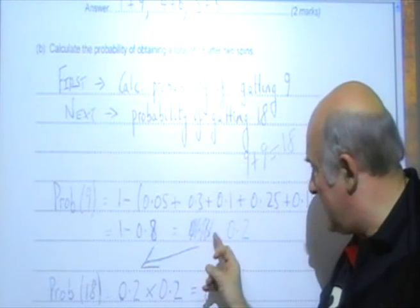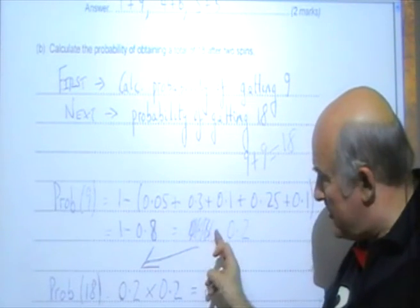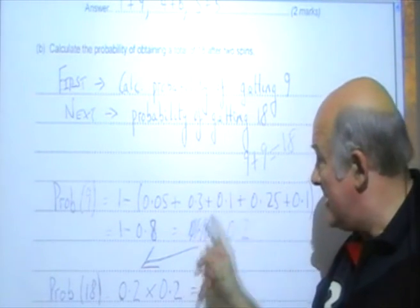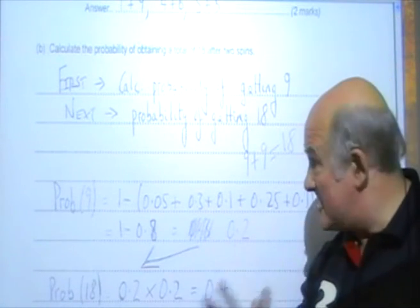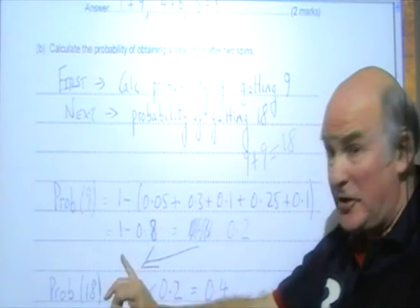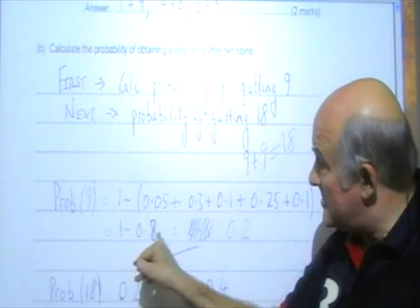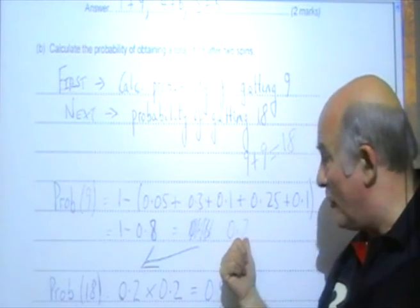Slight slip. Not too serious. 0.3, wrong answer. But realizes the answer is wrong, checks it again with his calculator perhaps. Good idea. And takes 0.8 away from 1, 0.2.